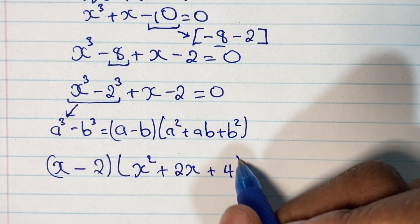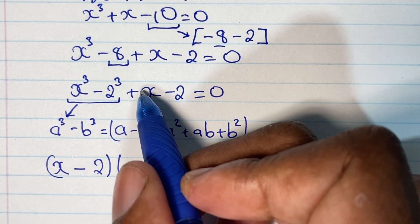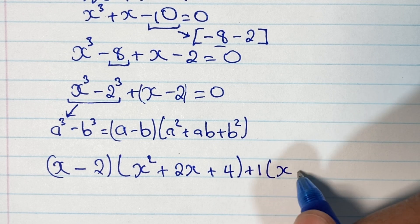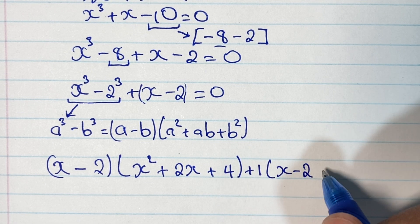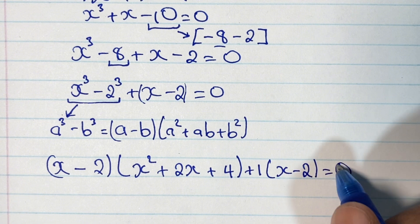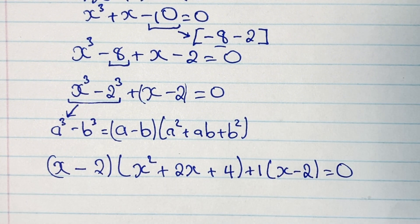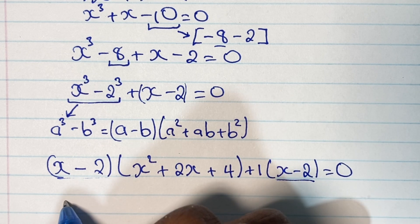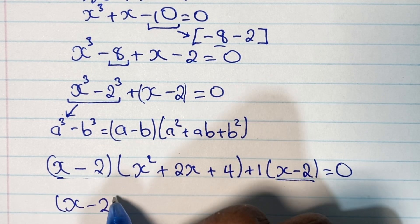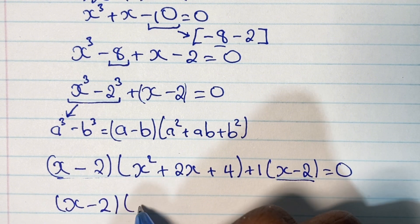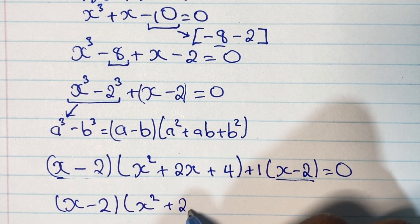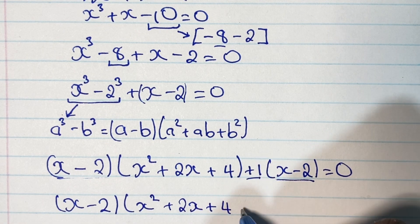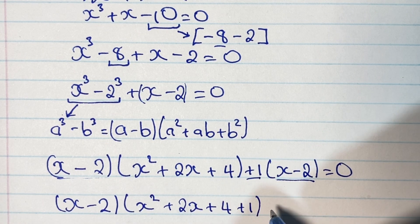For the next part where we have x minus 2, we factor out positive 1, giving us plus 1 times (x minus 2) is equal to 0. Now we have x minus 2 appearing in both terms, so we can factor out (x minus 2), giving us (x minus 2) times (x squared plus 2x plus 4 plus 1) equals 0, which simplifies to (x minus 2)(x squared plus 2x plus 5) equals 0.